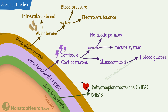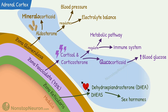The innermost reticularis layer secretes androgens such as dehydroepiandrosterone and its sulfated form DHEAS — these are sex hormones. Glucocorticoids, mineralocorticoids, and sex steroids together are grouped under steroid hormones, and the process of their synthesis is known as steroidogenesis.